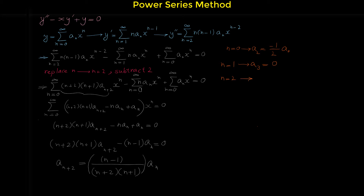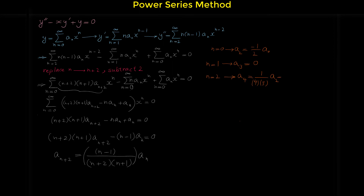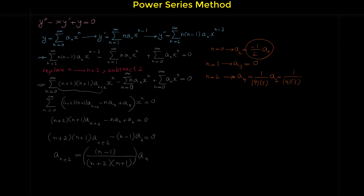Plugging in n equals two: a₄ equals two minus one is one, and in the denominator four times three, times a₂. Since a₂ equals negative one over two times a₀, we substitute: a₄ equals one over four times three, times negative one over two, times a₀, which gives a₄ equals negative one over four factorial times a₀.